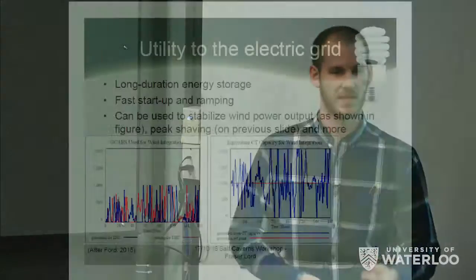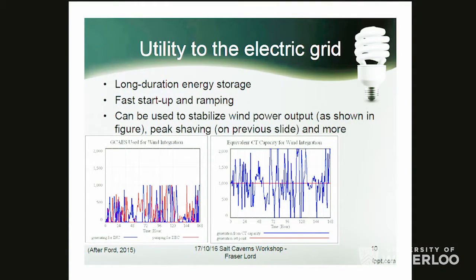CAES and pumped hydro storage are generally the two economically feasible, large-scale, long-duration energy storage facilities. CAES has fast startup times, fast ramping ability — usually 10% to 20% per minute, which is good even by natural gas turbine standards. It can be used for a multitude of purposes, such as integrating wind power into our grid. For example, a study by Andrew Ford for Ontario found that to balance wind farm output to a steady 1,000 megawatts, we would need 1,000 megawatts of CAES production and 1,000 megawatts of compression power, almost totally leveling the output.